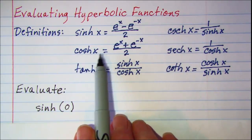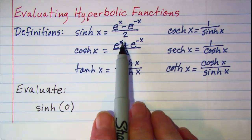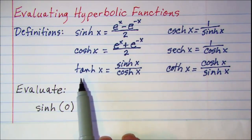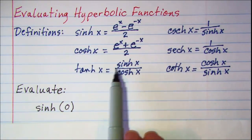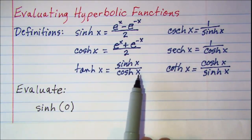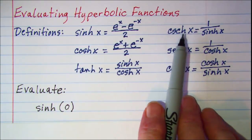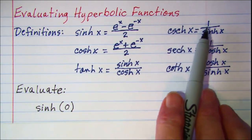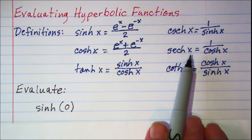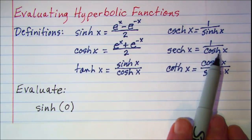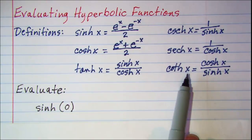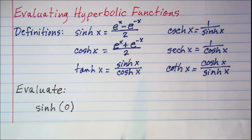The hyperbolic cosine of x is equal to e to the x plus e to the negative x divided by 2. The hyperbolic tangent of x is equal to the hyperbolic sine of x divided by the hyperbolic cosine of x. The hyperbolic cosecant of x is the reciprocal of the hyperbolic sine of x, the hyperbolic secant of x is the reciprocal of the hyperbolic cosine of x, and the hyperbolic cotangent of x is the reciprocal of the hyperbolic tangent of x.